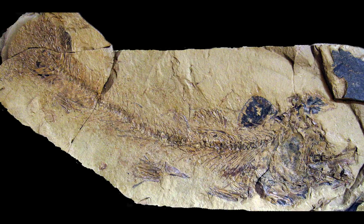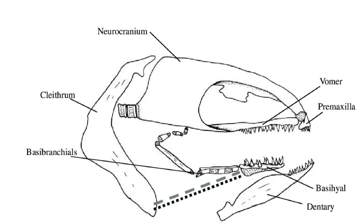Eosalmo exhibits a number of features found in modern trout and graylings, but lacks teeth along the basal hyoid bone. In modern trout and salmon, teeth are found along the vomer, pre-maxillary, dentary, and basal hyoid bones that form the mouth.